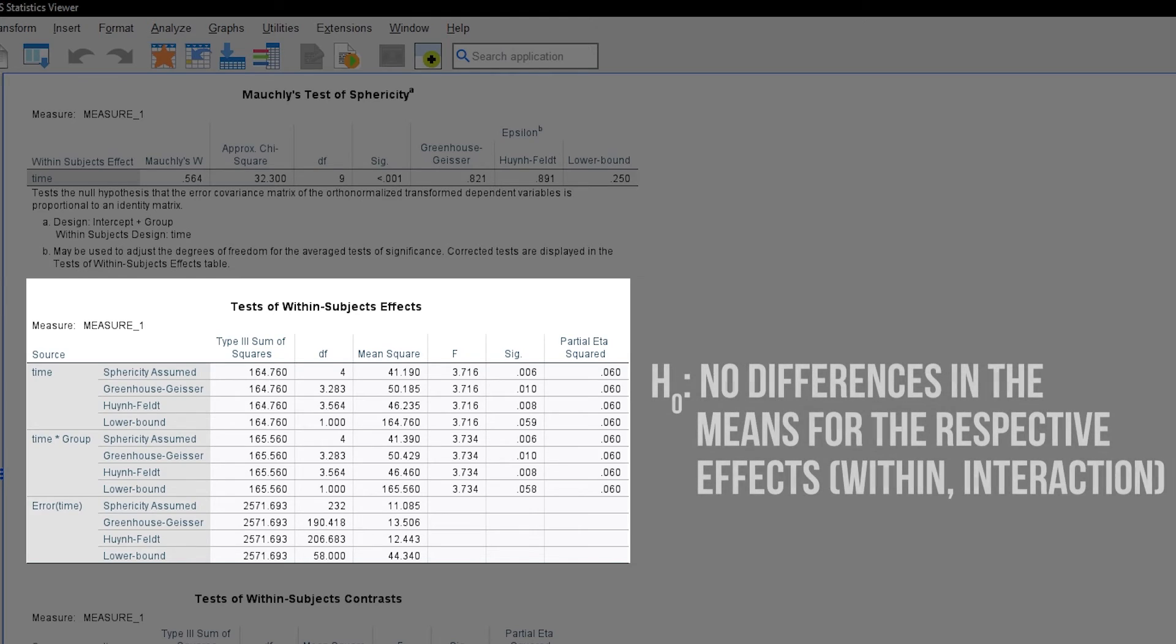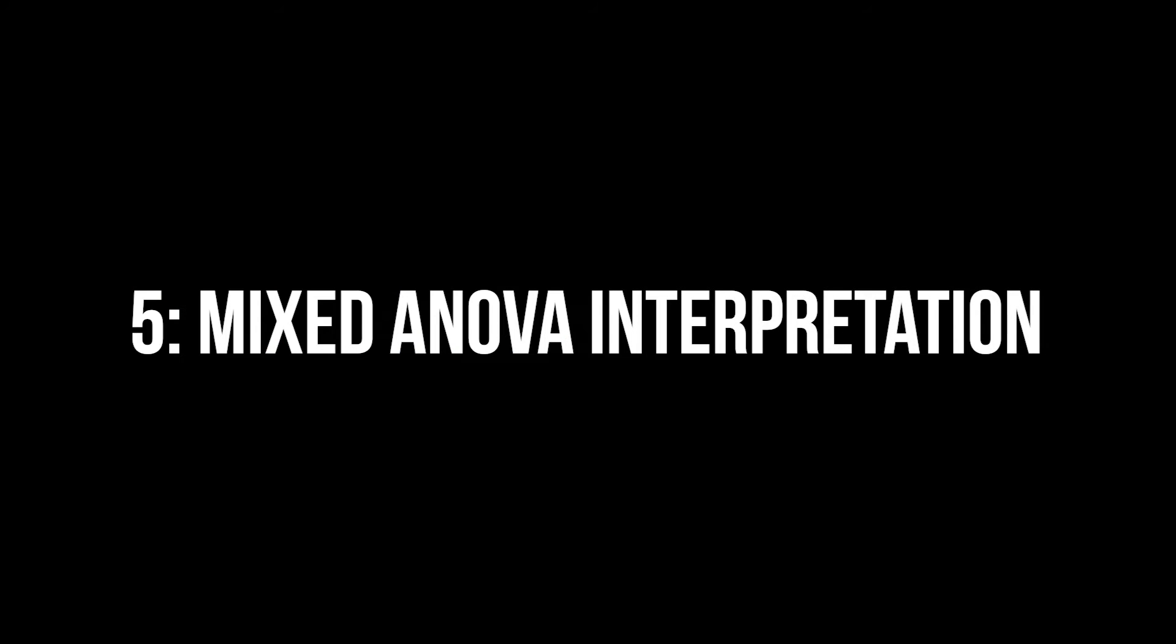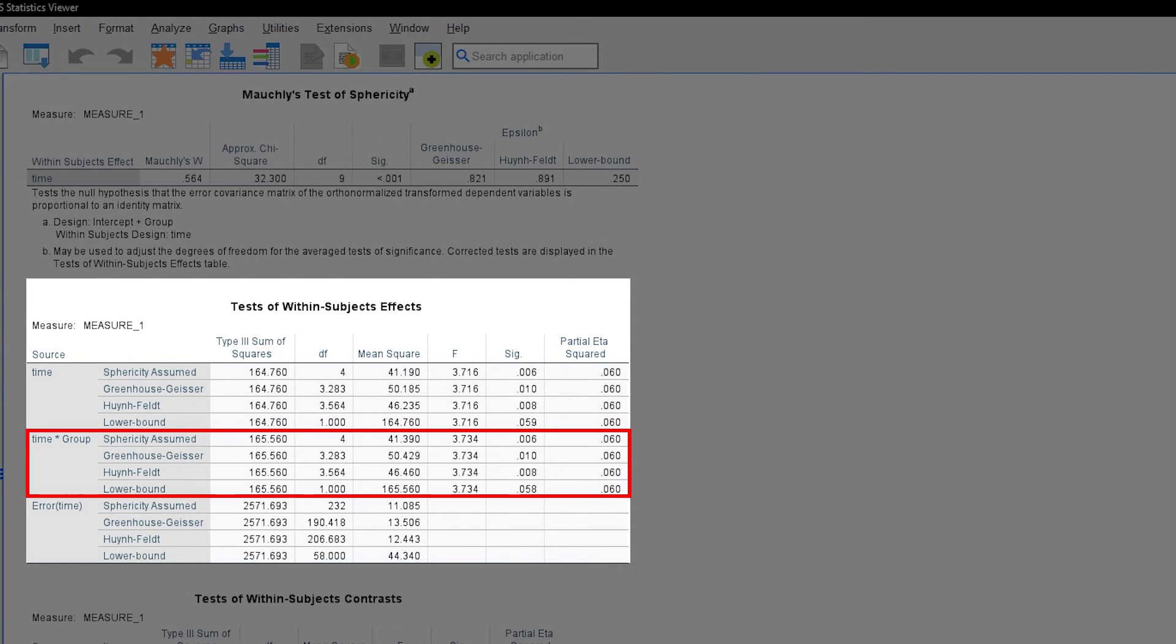Reminder, the null hypothesis of the mixed ANOVA assumes no differences in the mean values for the respective effects. We will now focus on the table tests of within subjects effects. The first look should be on the interaction effect. It is used to decide whether the within subjects effect and between subjects effect should even be considered. If the interaction effect has a sufficiently small p-value, for example smaller than 0.05, an interaction effect between within subjects and between subjects effect is present.